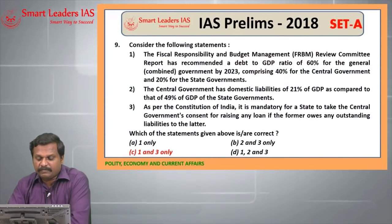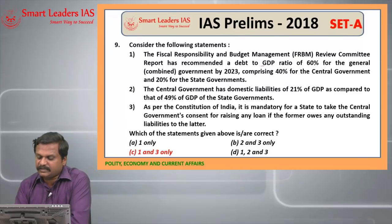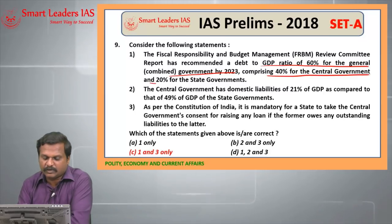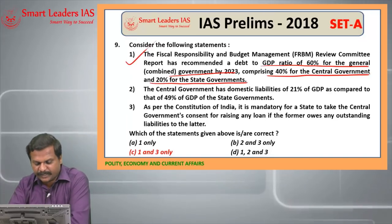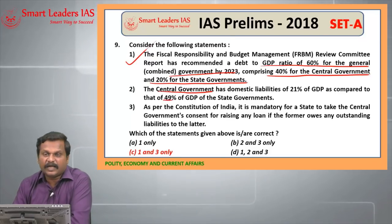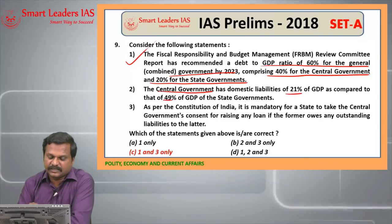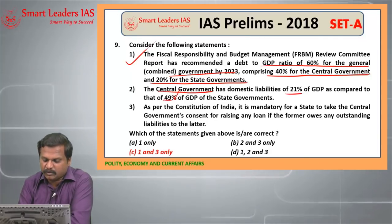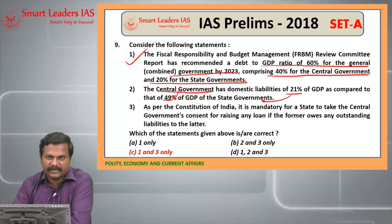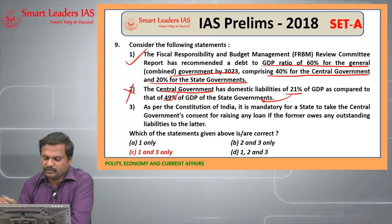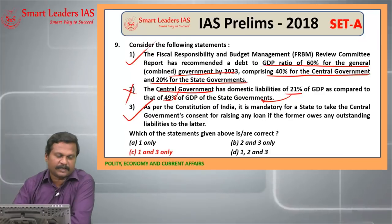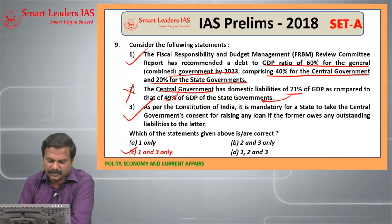The next question: the FRBM Review Committee has recommended a debt-GDP ratio of 60% for the general government by 2023, comprising 40% for the central government and 20% for the state government — this is a right statement. The second statement is wrong because the central government's domestic liability is 49% and the state liability is 21%, so the facts are wrongly given. As per the Constitution of India, it is mandatory for the state to take the central government's consent for raising any loan — this is a right statement under Article 293. Hence, the answer is 1 and 3 only.